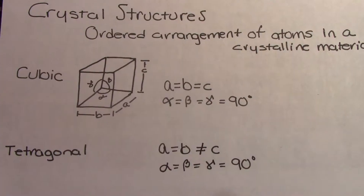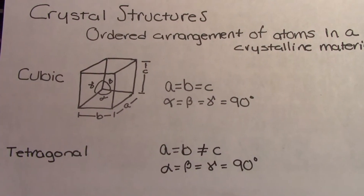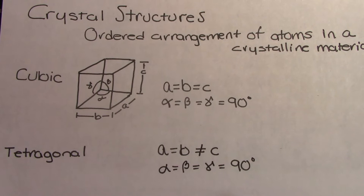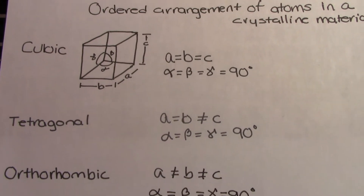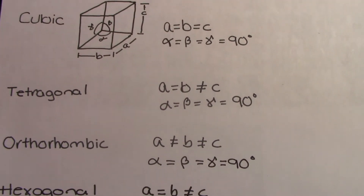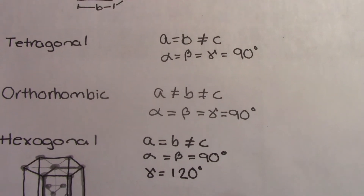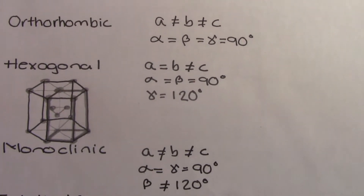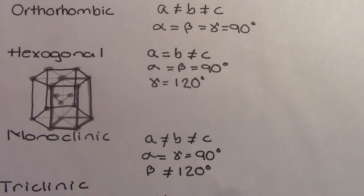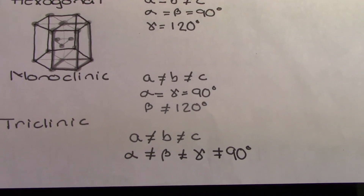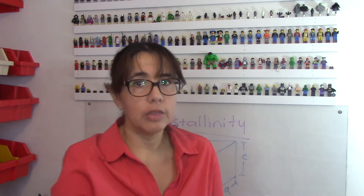Let's first look at the seven different types of crystal structures. The most basic is cubic, where all the sides are of the same length and all the angles are equal to 90°. Next is tetragonal, where c is a little longer than all other sides. Then we have orthorhombic, hexagonal, monoclinic, and triclinic. The atoms accommodate in these structures in different ways.